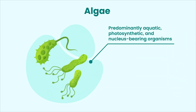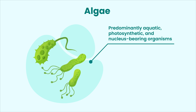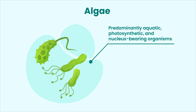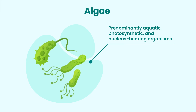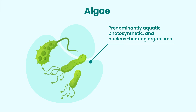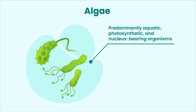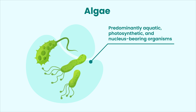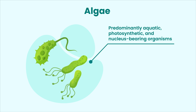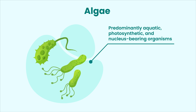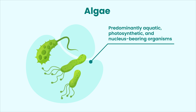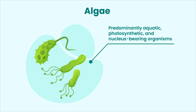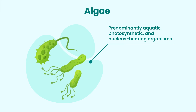Talking about algae. Algae are defined as a group of predominantly aquatic, photosynthetic and nucleus-bearing organisms. They lack the true roots, true stems and true leaves, and they have specialized multicellular reproductive structures of the plants. Algae are found all over the world. They are important because they make 70% of the earth's oxygen. There are about 27,000 different species of algae.